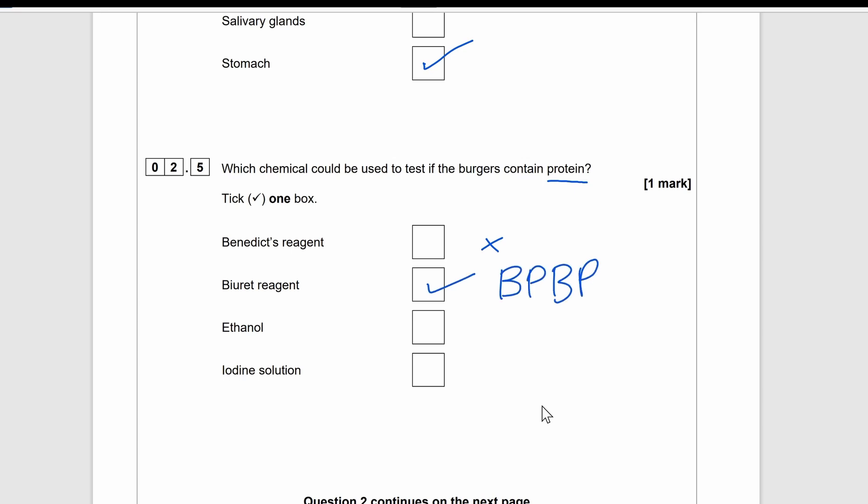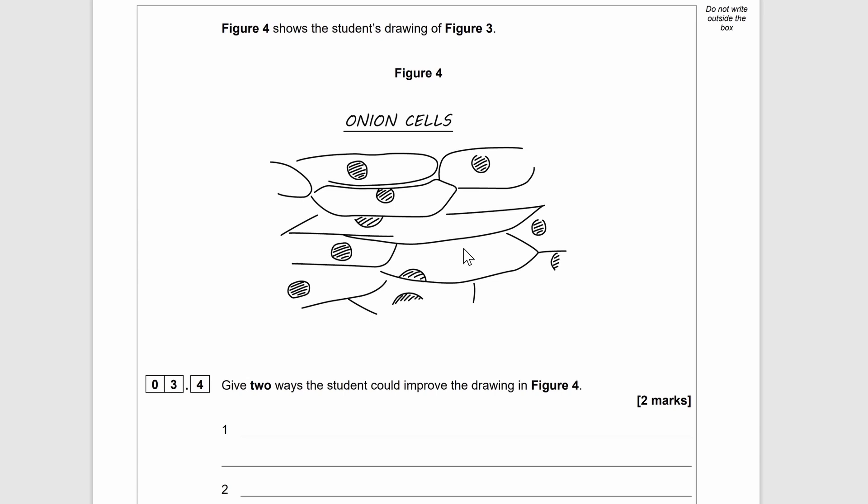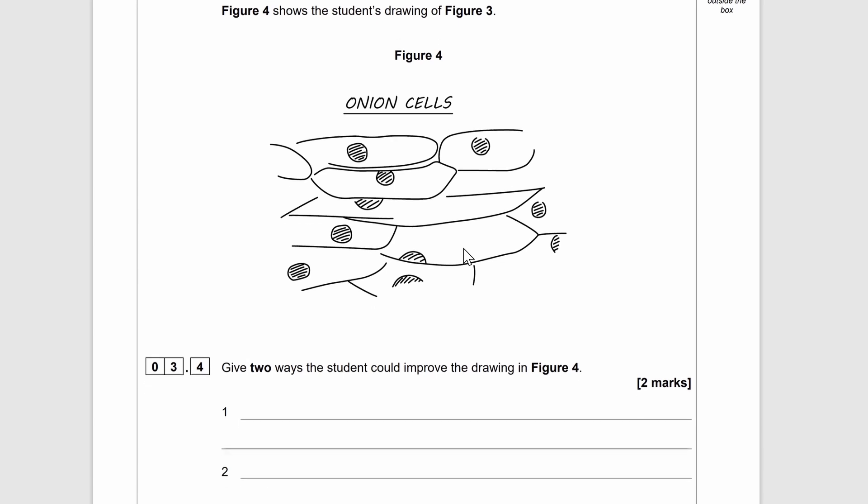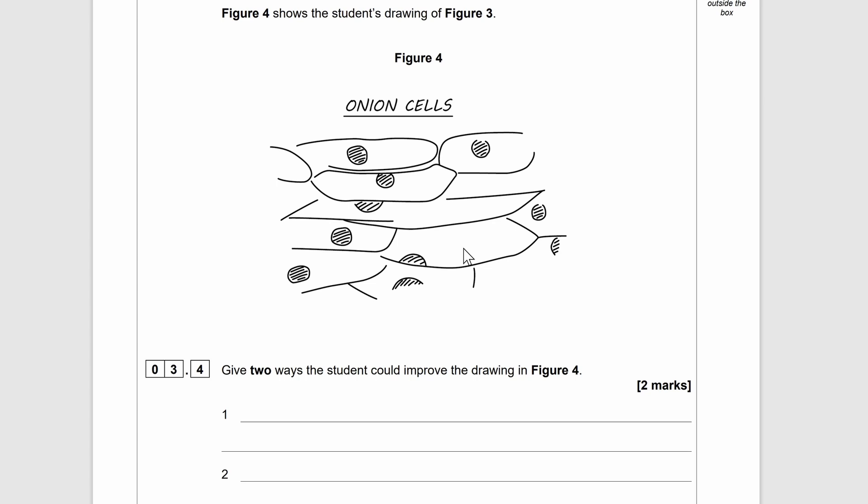Another practical skill is drawing scientific images. It's related to your microscope practical in B1 cell biology. So there may be a question where it may ask you to give or state the rules for drawing scientific images, give you an example of a drawn scientific image and you need to state ways to improve the drawing, or they may give you a diagram of a cell or specimen that's viewed under a microscope and then you need to draw the scientific images demonstrating that you know the rules.